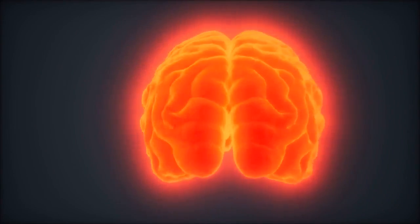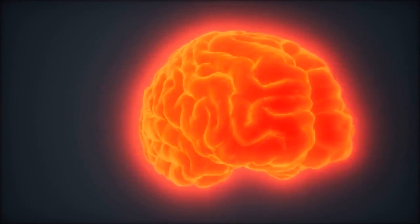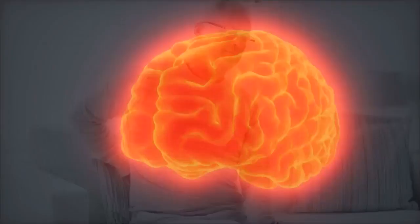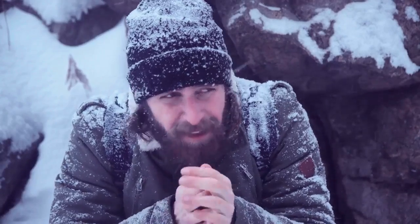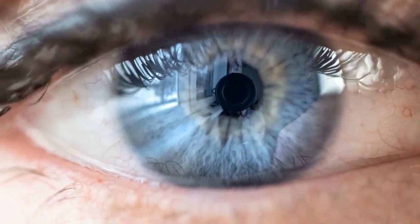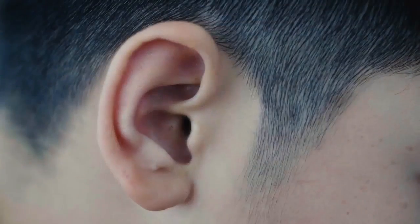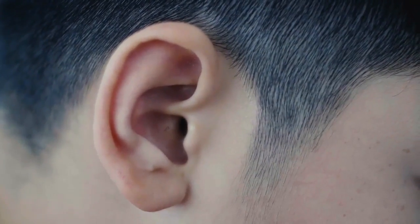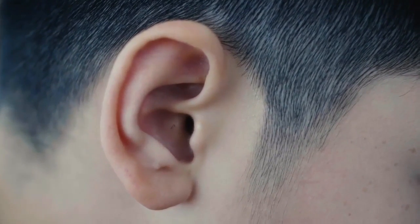The frontal lobes process your thoughts and speech, as well as learning, emotions, and some types of memory. Your senses of pain, touch, heat, and cold are handled by the parietal lobes behind the frontal lobes. The occipital lobes at the back of the brain decode visual information from our peepers. The temporal lobes near your temples process memories and sounds transmitted from your ears.